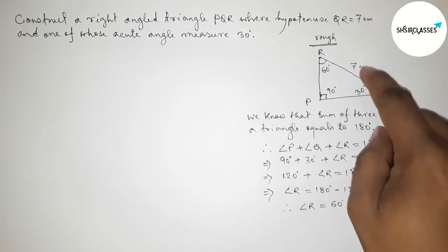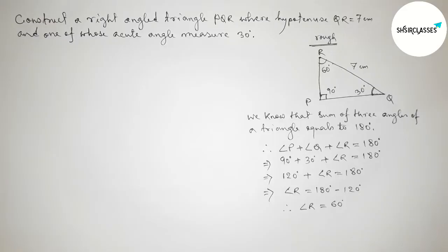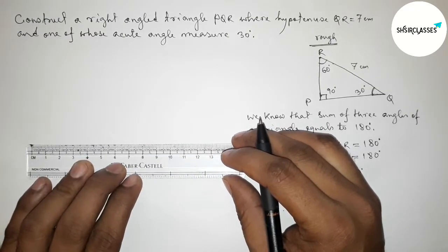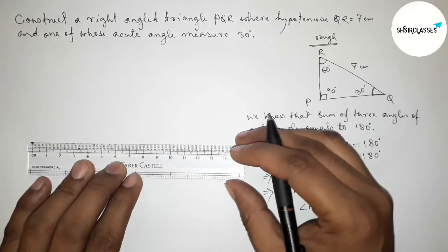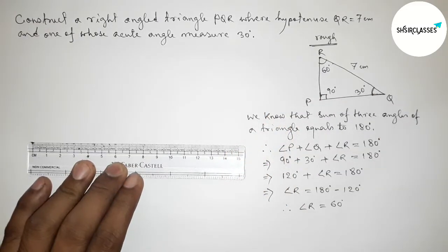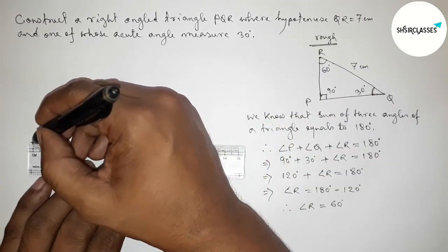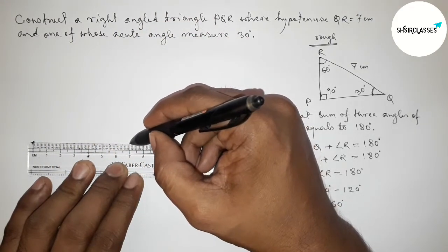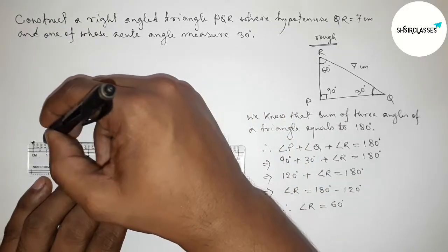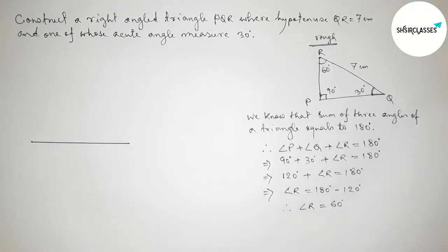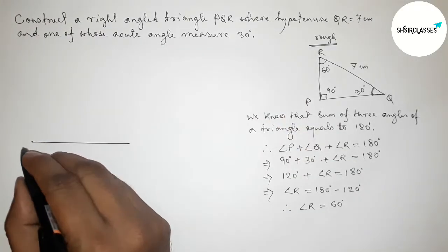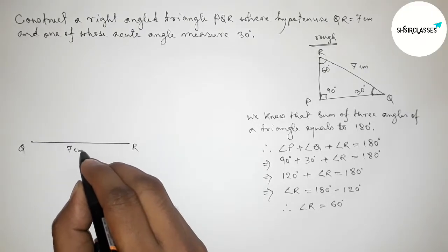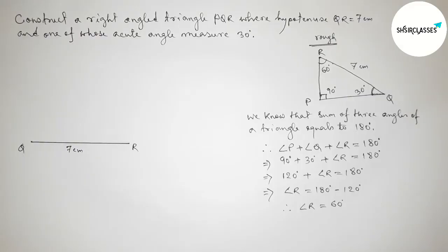Now I am going to apply this concept to construct the right angle triangle PQR. First, drawing the hypotenuse QR equals 7 centimeters — starting from 0 to 7 centimeters. This is the line segment QR, with point Q on the left and R on the right.